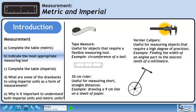Vernier calipers are useful for measuring objects that require a high degree of precision. We could use calipers to find the width of an engine part to the nearest tenth of a millimeter.